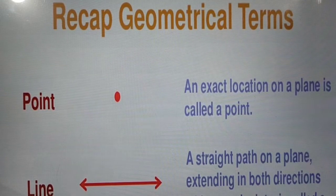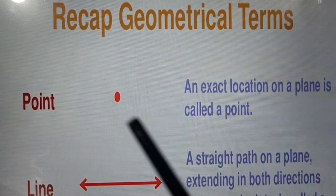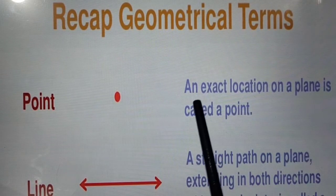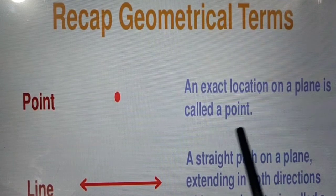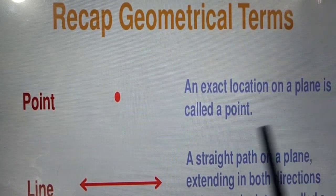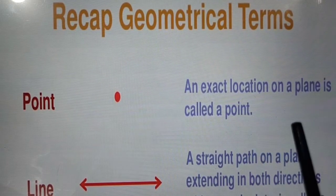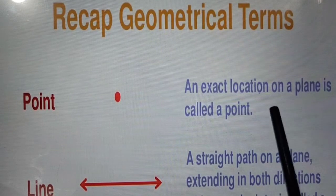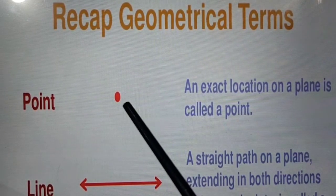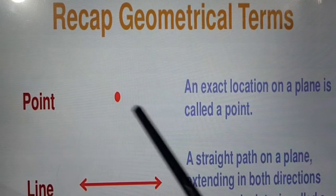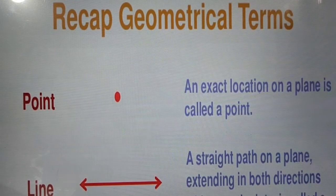First, the point. An exact location on a plane is called the point. The point gives us the location of any point that is placed in the plane, and this is the notation of how we can symbolize a point. That is the definition of the point.